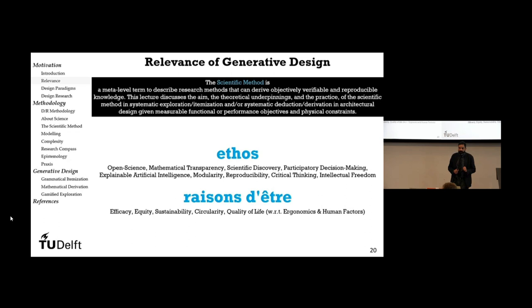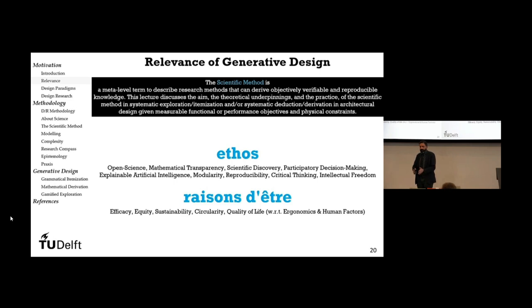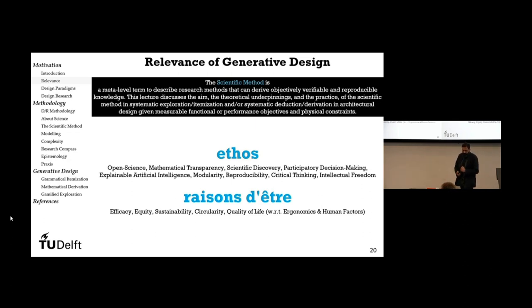We aim for participatory decision-making, explainable artificial intelligence — not using black boxes we cannot explain. We are doing all of these things through modular processes and modular products. We aim for reproducibility: the quality that if I do this experiment and you do the same experiment, you will get to the same answer — virtually no possibility of bias entering the decision-making process.